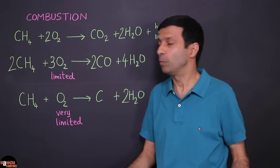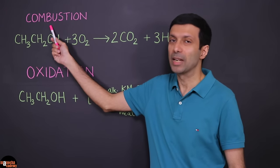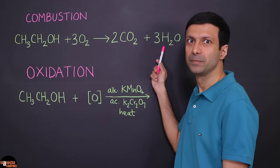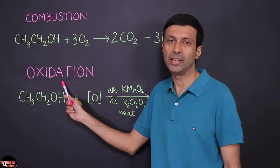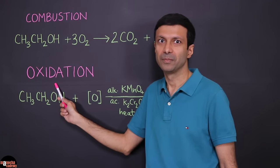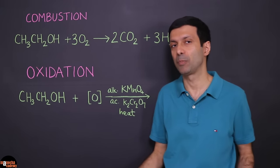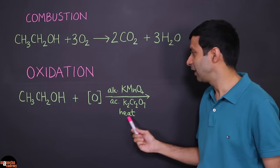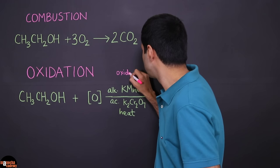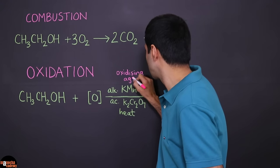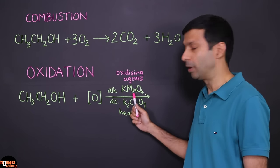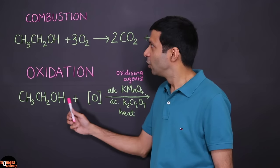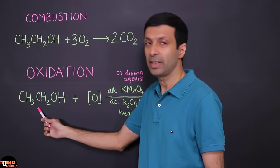Earlier we looked at combustion of carbon compounds — for example ethanol burns in air to produce carbon dioxide and water vapor. Now let's look at a new type of reaction called oxidation. What's the difference? Combustion is a rapid, spontaneous process, but oxidation is like controlled combustion — we control it using oxidizing agents such as alkaline potassium permanganate or acidified potassium dichromate, and we need to heat the reactant.